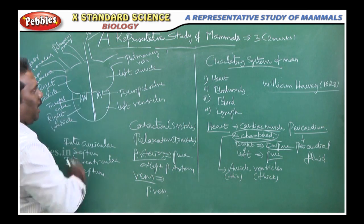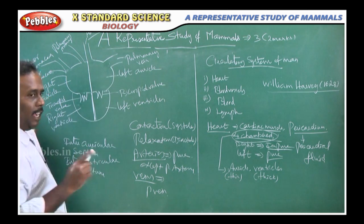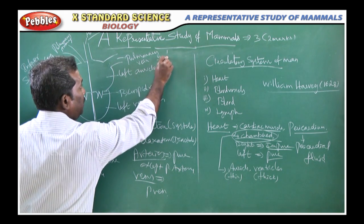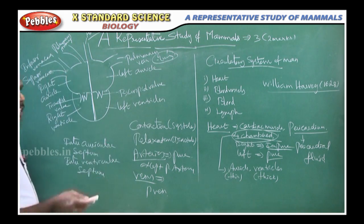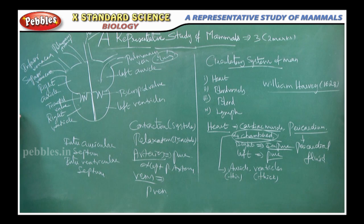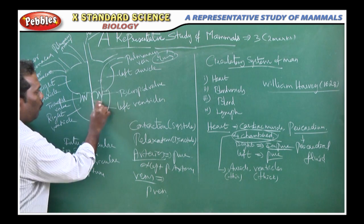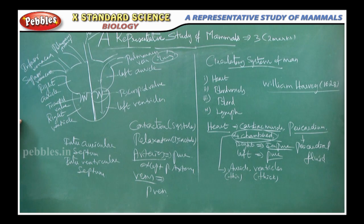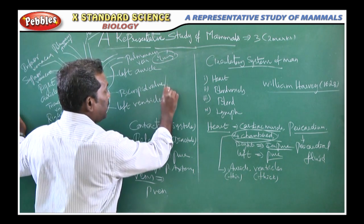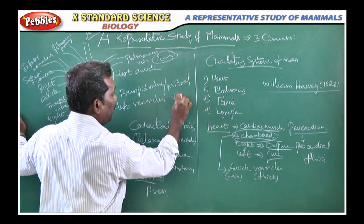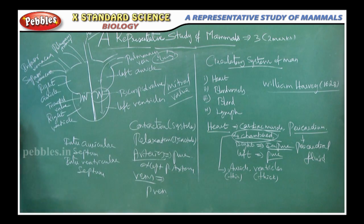Observe the diagram. The pulmonary vein collects oxygenated blood from the lungs and pours it into the left auricle, the upper chamber of the heart. From the left auricle, the blood passes to the left ventricle with the help of a valve called the bicuspid valve, which is otherwise called the mitral valve. These are expected exam questions.